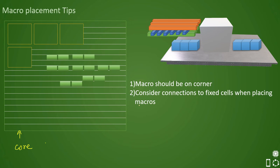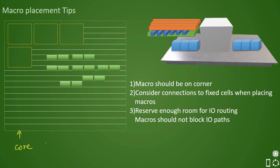The second rule was that we have to consider connections to the fixed cells when placing the macros. This means that if there are certain cells which are always fixed in their location and have a connection to a macro, we need to respect that and place the macros accordingly.